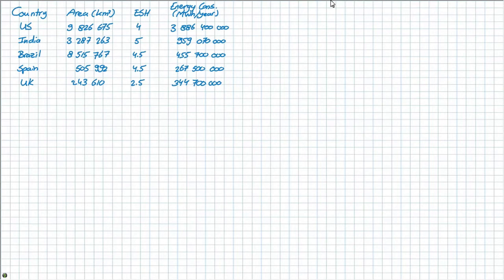Here I have already written down the data given in the assignment. You have a list of five countries with their areas given, the equivalent sun hours given, as well as their annual energy consumption. These sun hours per day show the equivalent hours that the sun shines with an irradiance of 1000 watts per square meter. For the US this is 4 hours per day, and for India this is 5 hours.